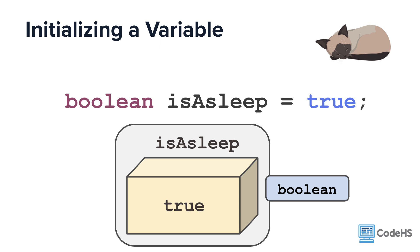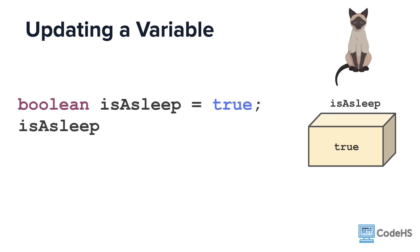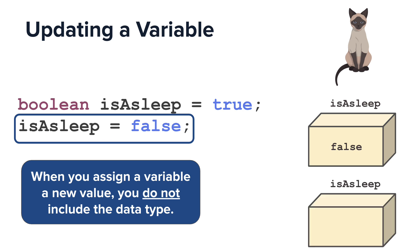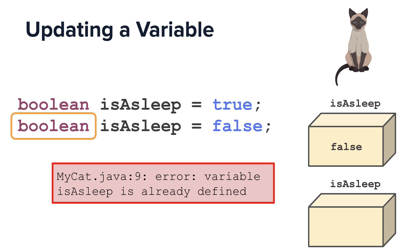But what if the cat wakes up? The great thing about variables is that you can update their value throughout the program. So after you have initialized the value of isAsleep to true, you can update the value by writing the variable name isAsleep, followed by the equal sign, followed by the new value — in this case false because the cat is not asleep. An important note: when you assign a variable a new value, you do not include the data type. This is because the data type signifies the computer to create a new variable of that data type. So if you include the keyword boolean, this would actually create another variable with a boolean data type named isAsleep. Because each variable has to have a unique name, this would cause an error when you try and run the program.